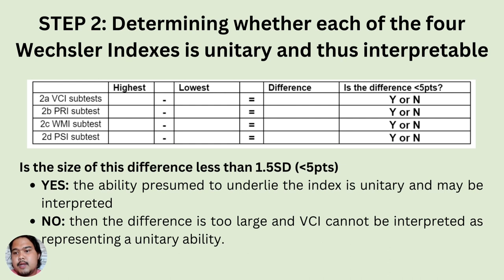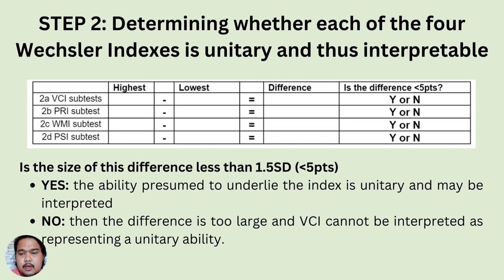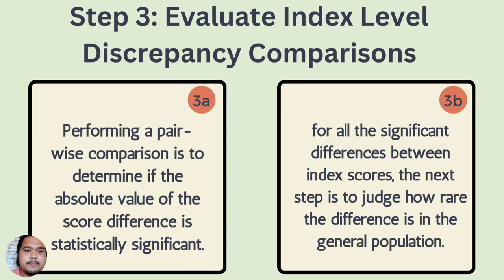In this step, also check whether GAI and the CPI, or Cognitive Proficiency Index, are interpretable. If GAI is interpretable, compare it with CPI and proceed to Step 3. If the size of the difference between WMI and PSI is less than 1.5 standard deviations or less than 23 points, then GAI and CPI are interpretable — proceed to Step 3. If not, the GAI and CPI comparison cannot be made.